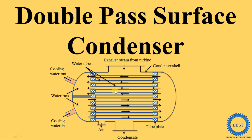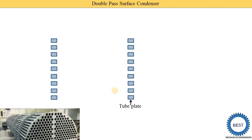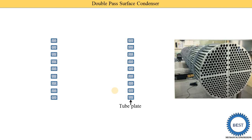First we see the animation of the double pass surface condenser. The first part is the tube plates. This is the sectional front view. When we see the tube plate from the side view, it is a circular plate made from metal. There are two tube plates — one on each side. Depending on the length of the tubes, multiple tube plates are provided. A tube plate is a cylindrical component with a number of holes through which pipes are installed.